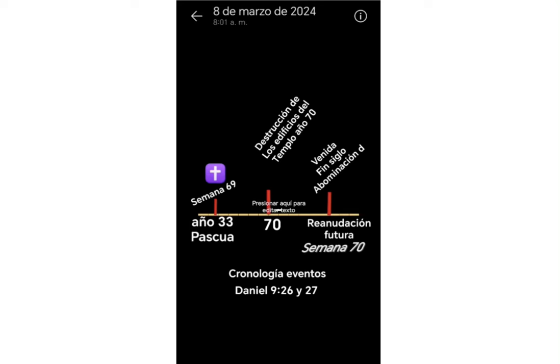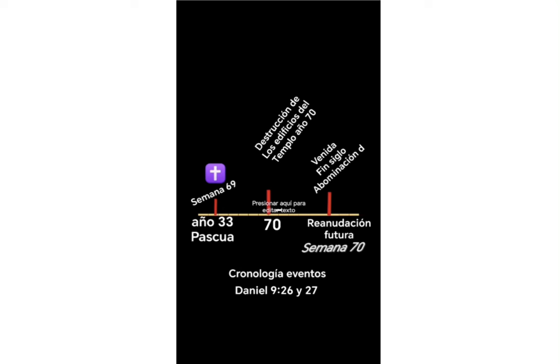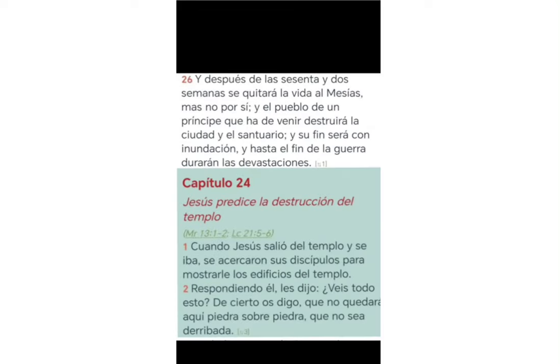I have put it here in the image so you can see the concordance of verse 26 on the screen. It tells us that at 62 weeks — which is 69 because before there are the 7 weeks — the life of the Messiah is taken from Jesus Christ. That is why we saw him on the cross in the year 33 when Christ dies. After the year 33, there comes the destruction of the temple — not only of the temple buildings but of everything that was on the temple mount. There it says there is going to be a war, which we see in history; the temple was destroyed in approximately the year 70.